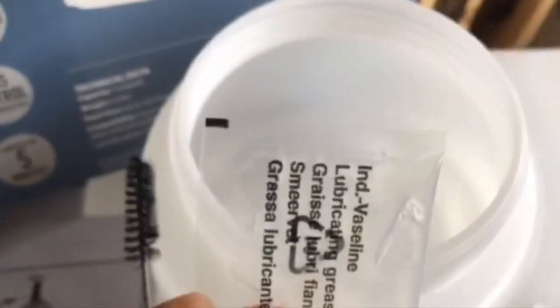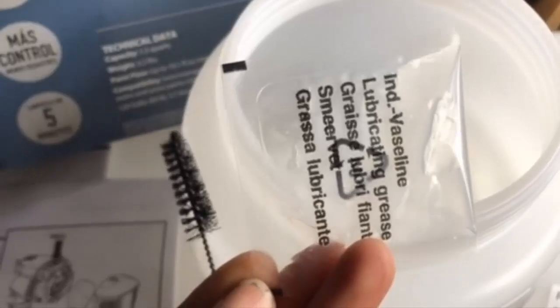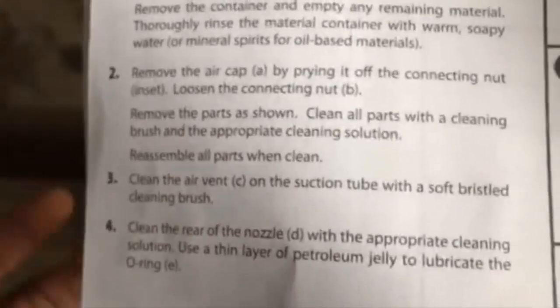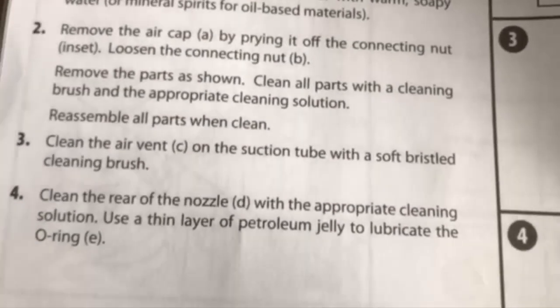The cup here, they had some Vaseline lubricating grease and a cleaning brush. From what they're saying here, they're saying clean the air vent in the suction tube with a soft bristle brush. So this little area up in here when you're cleaning it out, you can use that soft bristle brush.